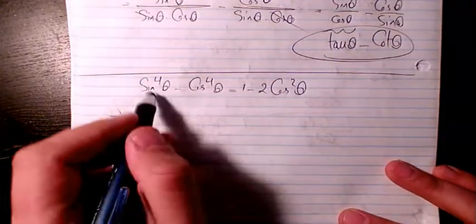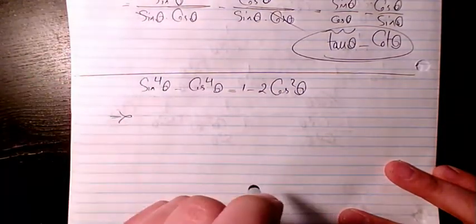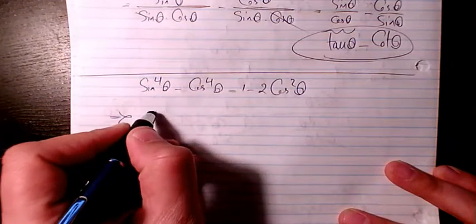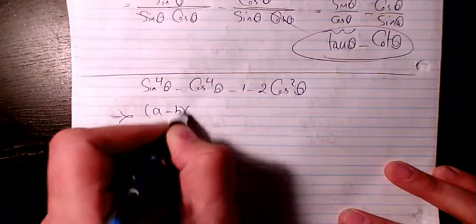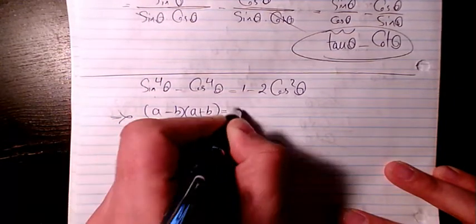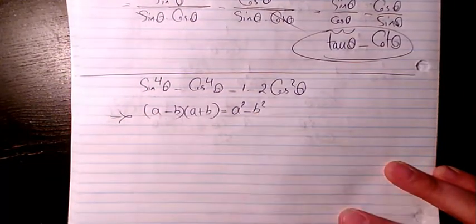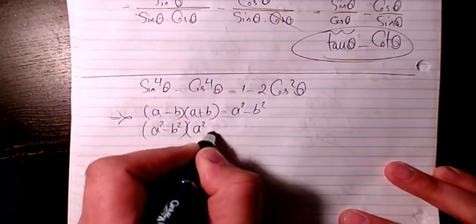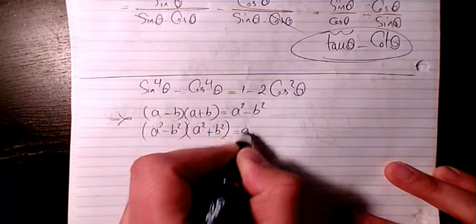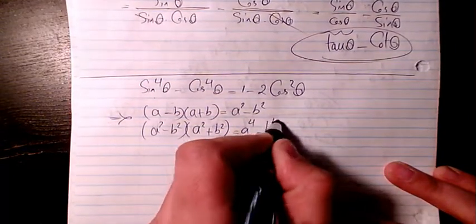First thing first, I know from the difference of squares we have a minus b times a plus b equals a squared minus b squared. Or I can say a squared minus b squared times a squared plus b squared equals a to the power of 4 minus b to the power of 4.